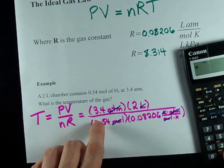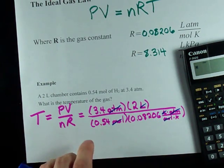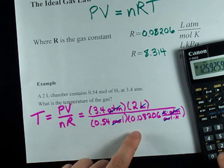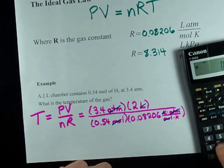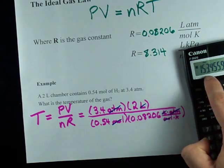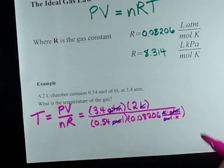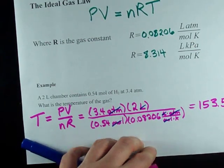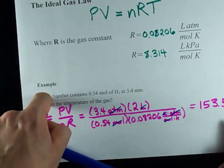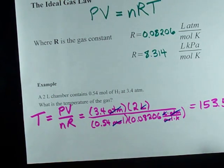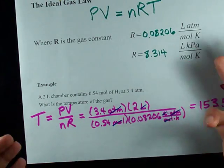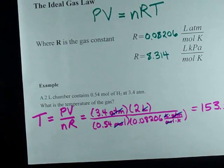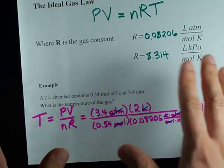Let's do this in the calculator. We've got 3.4 times 2 divided by 0.54 and divided by 0.08206. 153.5. Now, I haven't really included enough significant figures here, so I'm just going to leave it like that. If you had to round this to significant figures, the answer would be 200. Hence, why significant figures are sometimes stupid. But, in any case, 153 Kelvin for this particular scenario.